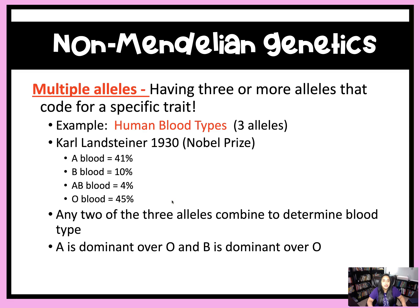The other type of non-Mendelian genetics is multiple alleles. This is when you have three or more alleles that code for one trait. The best example of this is human blood type — we have three different alleles for human blood type, and any two of those three alleles can be combined to make a different blood type. We have A, which is dominant over O, and also B, which is dominant over O. But A and B are co-dominant.